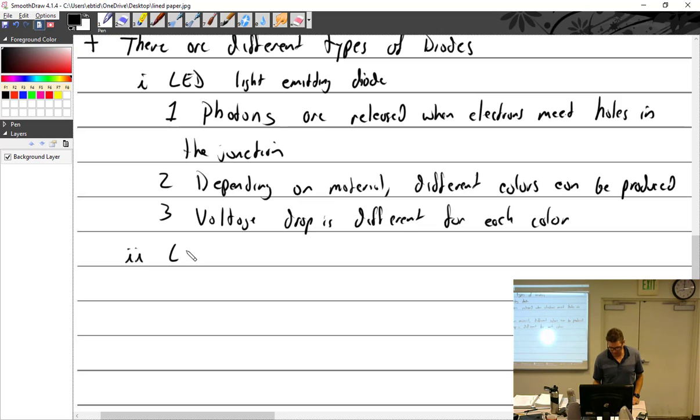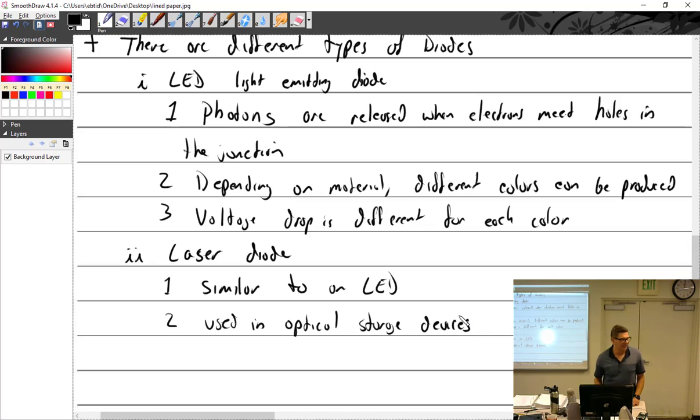We have laser diodes. Where do you find laser diodes? On a shark. This is what I had on here. Similar to an LED. Where would you find them? Used in optical storage devices, like the modern CD player. Because they're practically obsolete, right? I think it was Top Gun, now on DVD and Blu-ray. People still own those?